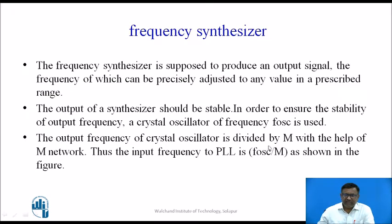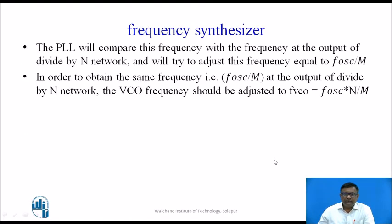The output frequency of the crystal oscillator is divided by M using the divide-by-M network, so the input frequency to the PLL is F_oscillator divided by M. The PLL compares this input frequency with the frequency at the output of the divide-by-N network and adjusts it to equal F_oscillator divided by M. To obtain this, the VCO frequency is adjusted to F_VCO = F_oscillator × N / M. Since F_oscillator and M are fixed, N is variable and can be changed to get any desired F_VCO frequency.